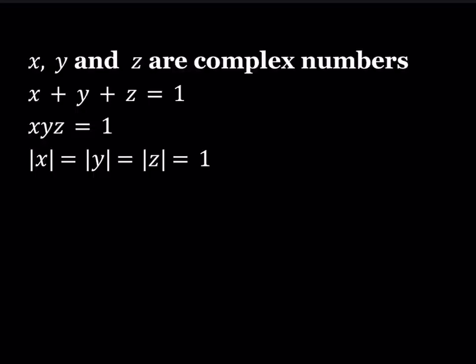X, Y and Z are complex numbers. X plus Y plus Z equals 1. XYZ equals 1. And we also know that the absolute value of each of these numbers is equal to 1. We're going to be finding the X, Y, Z values. But remember they are complex numbers, which of course includes real numbers. So let's get started.